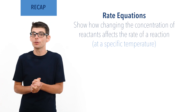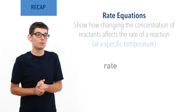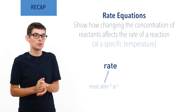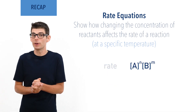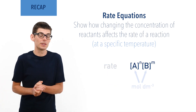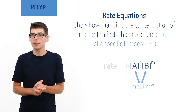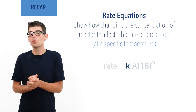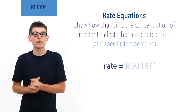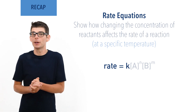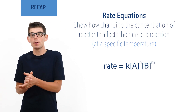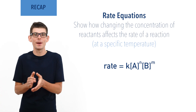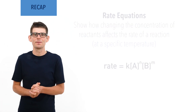Rate equations show how changing the concentrations of reactants affects the rate of a reaction and allow us to calculate the rate of a reaction based on concentrations of reactants at a specific temperature. Rate equations contain three parts: rate, with units of mole per decimetre cubed per second; concentrations of reactants raised to their orders, with units of mole per decimetre cubed; and a rate constant k. This gives a general arrangement of rate equals k multiplied by concentrations of reactants raised to the power of their order. Recap done — let's go!